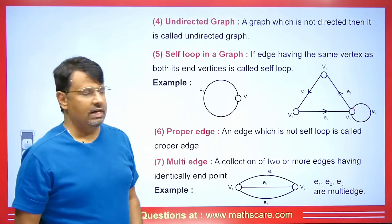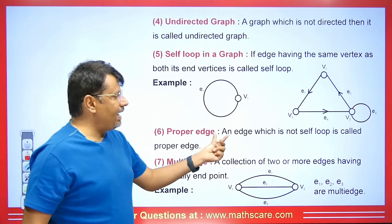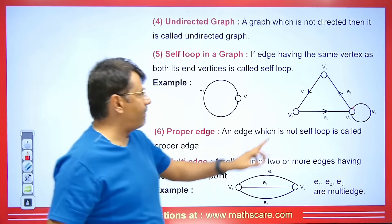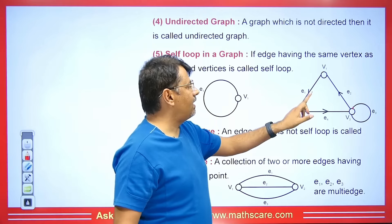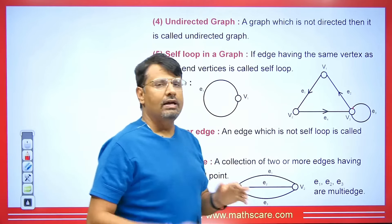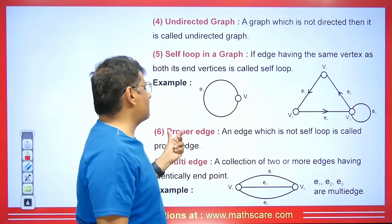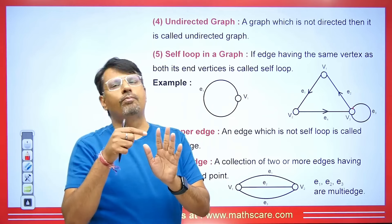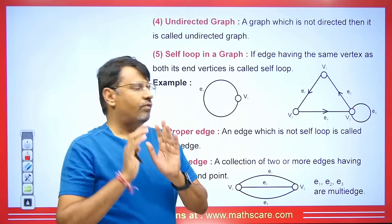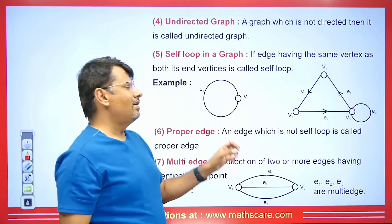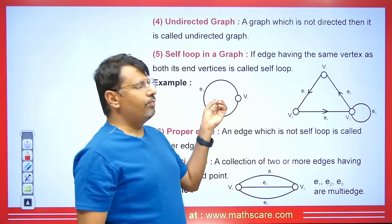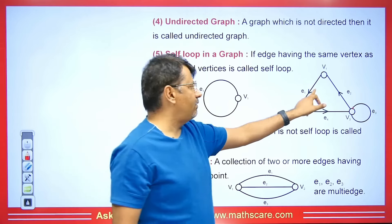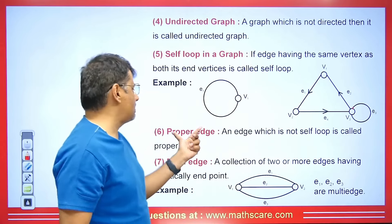A proper edge is an edge which is not a self-loop. Here E1, E2, and E4 are proper edges — they are not self-loops. Basically, an edge that makes a self-loop is not a proper edge. The edge that doesn't make a self-loop is called a proper edge.